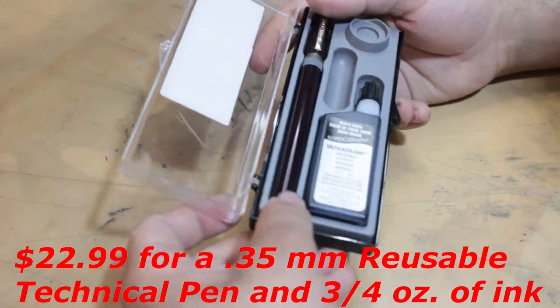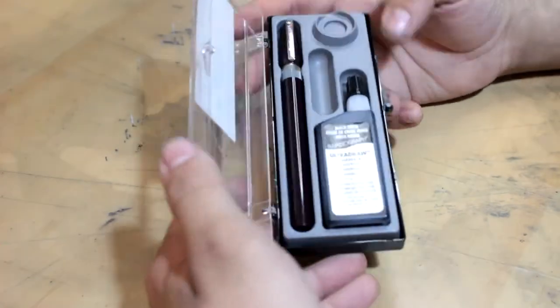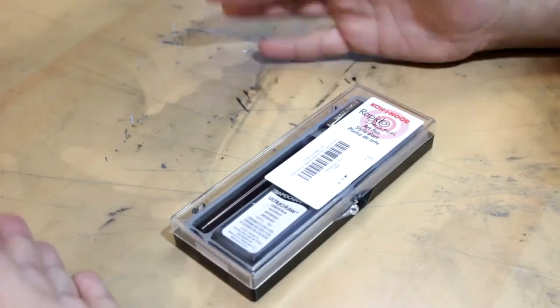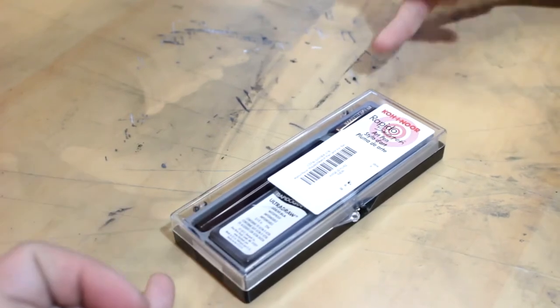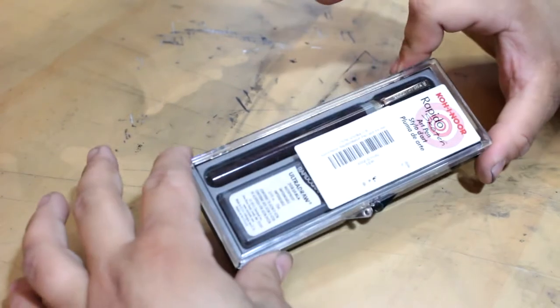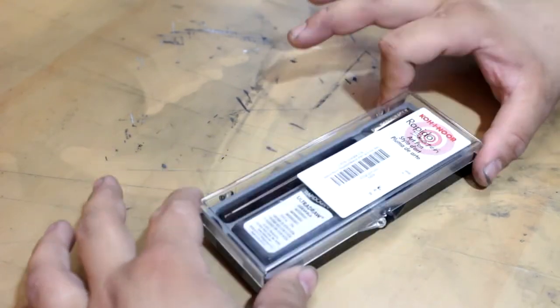What really caught my attention about this set is that for $22.99 you get a bottle of ink, a container, and a reusable technical pen. I've actually been looking to get a reusable technical pen for quite some time. This is actually the second one I bought as the first one came in broken.